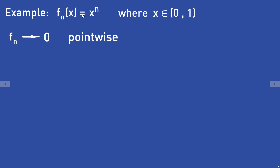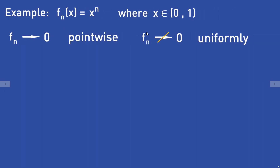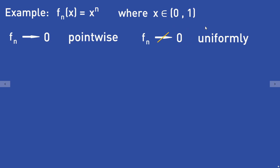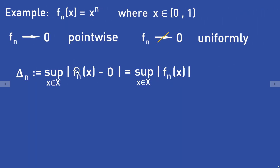This time fn = xⁿ for x in the interval [0, 1]. It can be seen easily that fn converges to 0 pointwise, because for an x₀ in [0, 1), x₀ⁿ converges to 0. But this sequence fn does not converge to 0 uniformly. To see that, we have to look at the largest distance between fn and 0, called δN. So δN = sup_{x ∈ [0,1]} |fn(x)|.